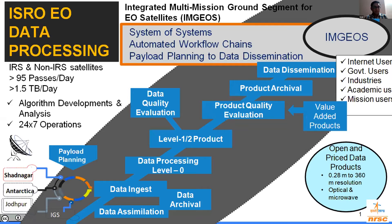IMGOS handles around 95 satellite passes and raw data volumes of around 1.5 TB on a daily basis. All this data goes through various levels of processing — Level 0, Level 1, and Level 2 processing. All generated products go through stringent quality checks, and value-added products are also generated on demand. These generated products belong to either the microwave or optical region in the electromagnetic spectrum, with resolution ranging from 0.28 meters to 360 meters.